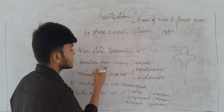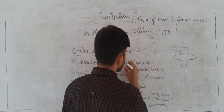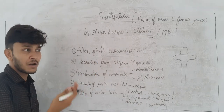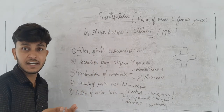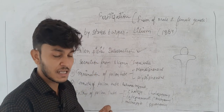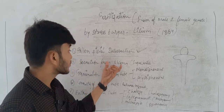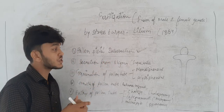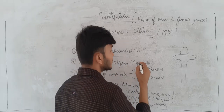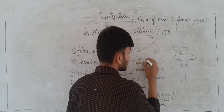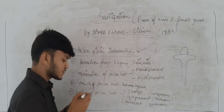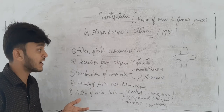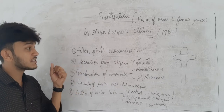The second event is secretion from the stigma. The stigma will secrete something to identify whether the pollen grain belongs to the same species.